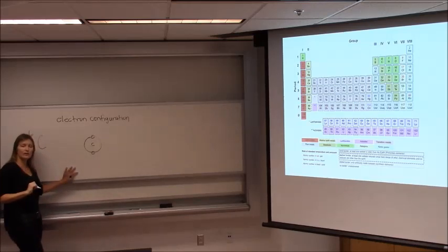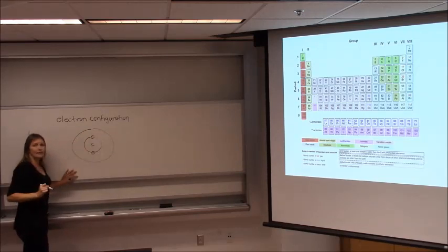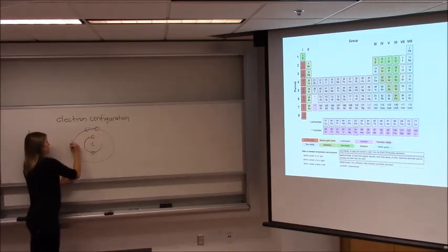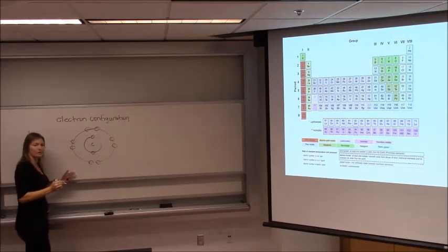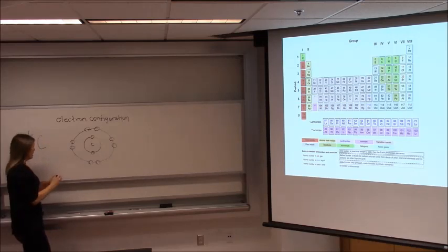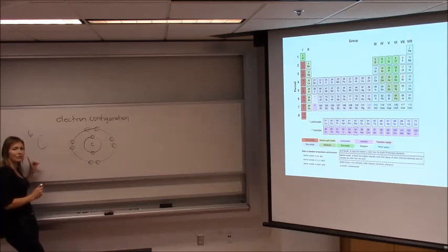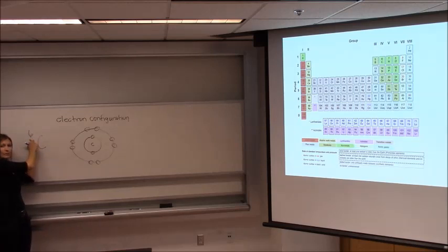There are two spots in the first shell — remember the first electron shell can hold a maximum of two. The second electron shell can hold a maximum of eight. I draw it this way because it's going to be easy when we start drawing molecules to show sharing of electrons. Carbon is atomic number six, which means it has six electrons total — it doesn't have four total, it has six total. The atomic number tells you the total number of electrons.